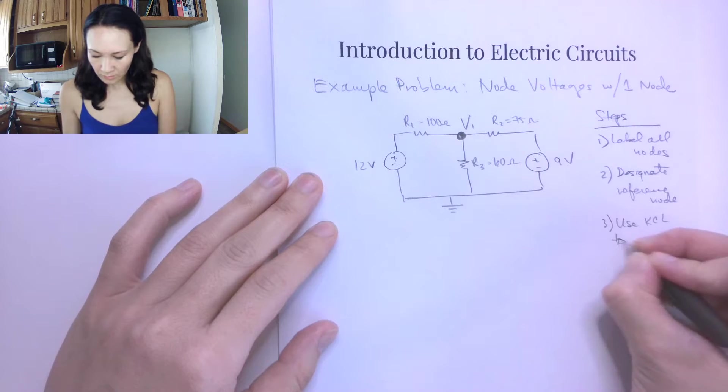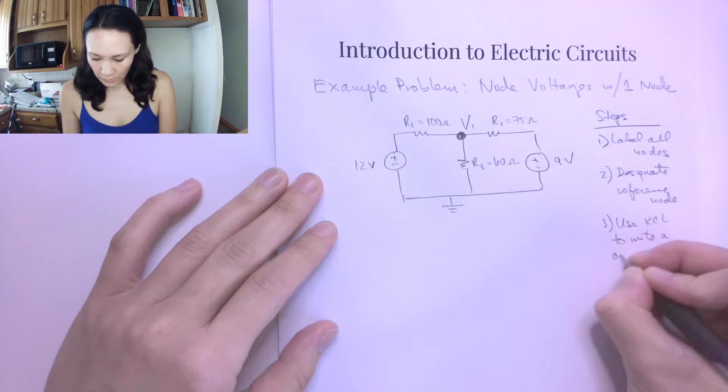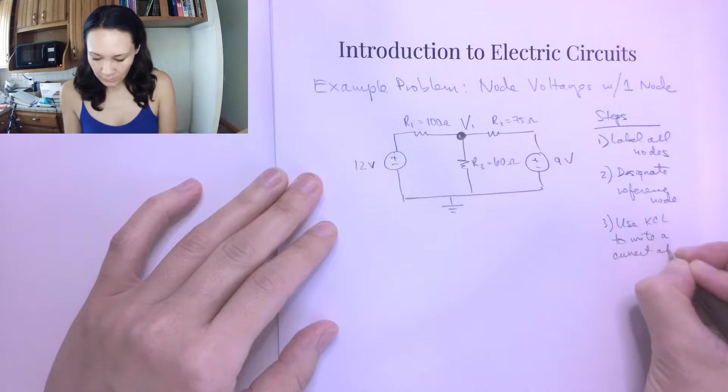Then the third step is we want to use KCL to write a current equation at each node.